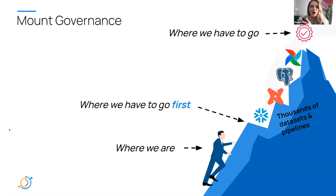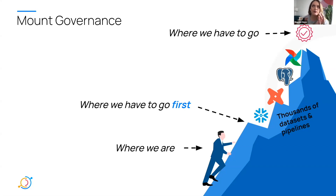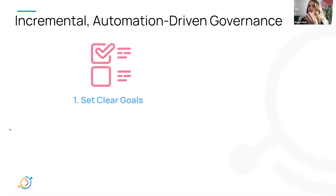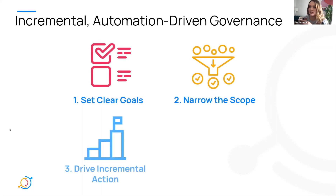The idea we're going to walk through is some examples of how you can start to iteratively address data governance management through both a work framework and through automated workflows within Managed Data Hub. When we talk about incremental automation-driven governance, there are four principles for us to consider.